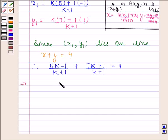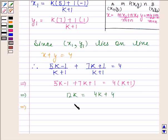This implies 5k minus 1 plus 7k plus 1 is equal to 4 into k plus 1. This implies 12k is equal to 4k plus 4, and this implies k is equal to 1 by 2.